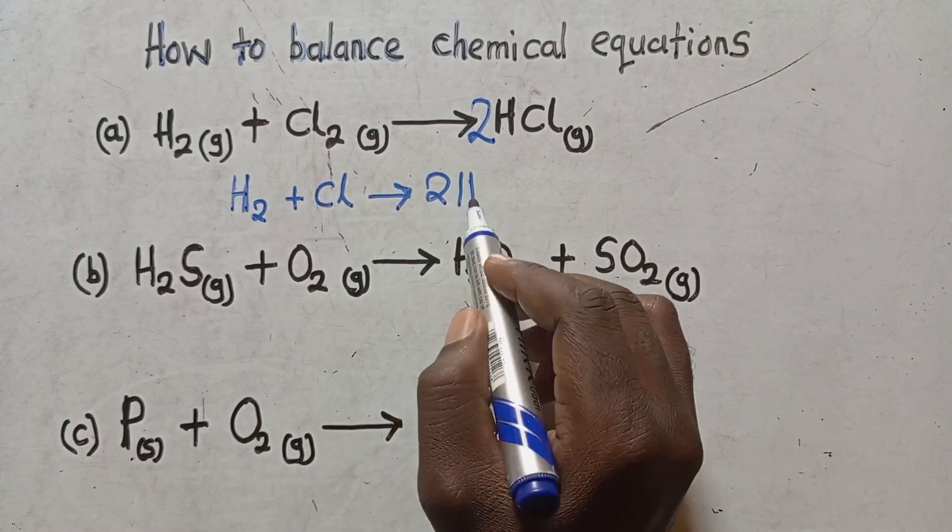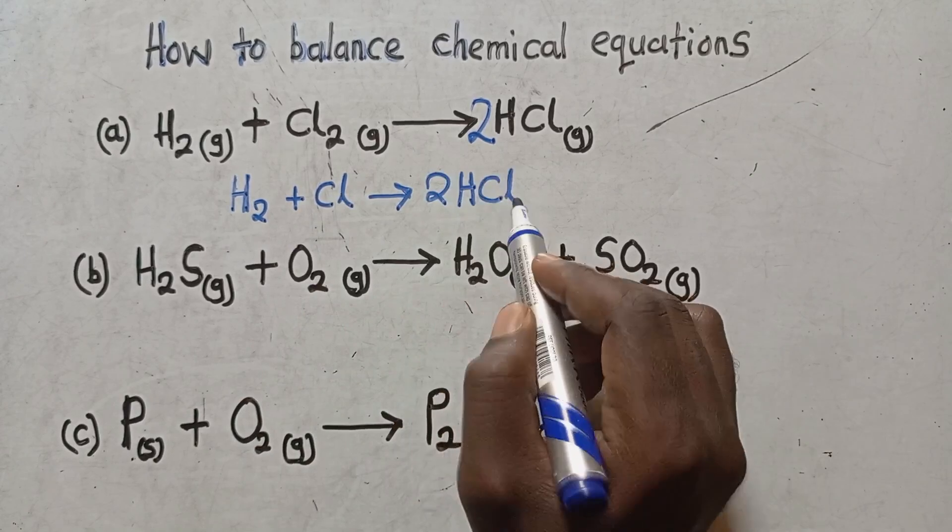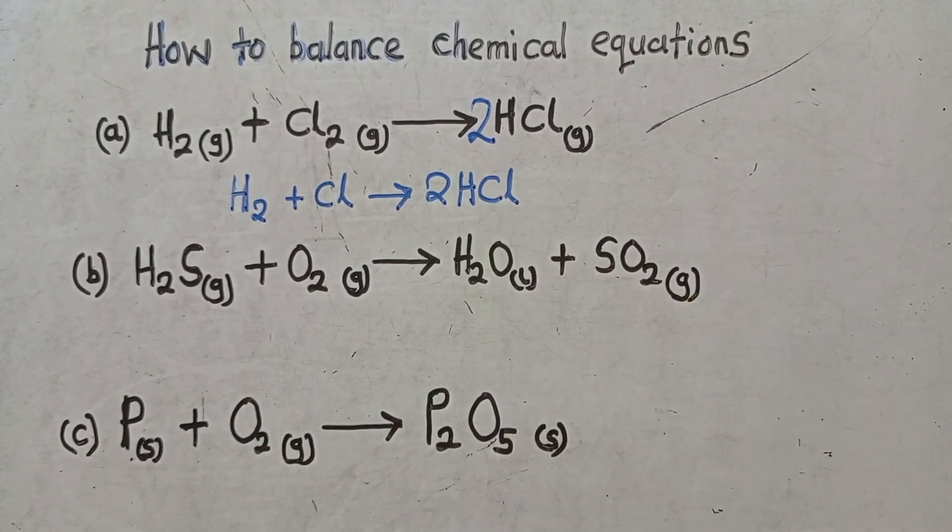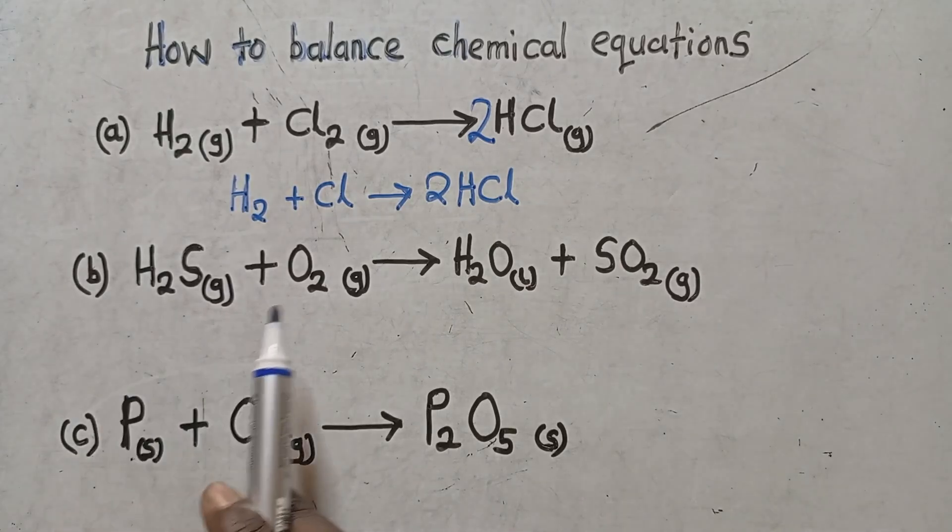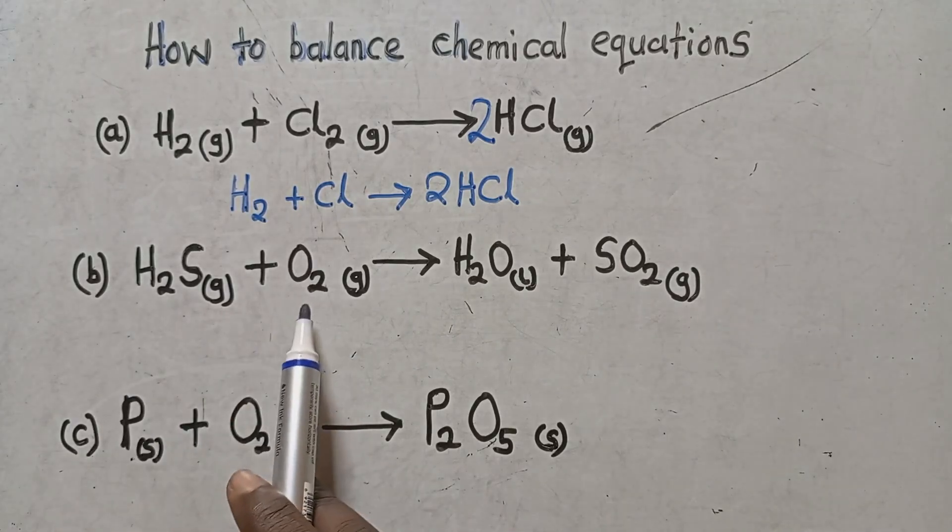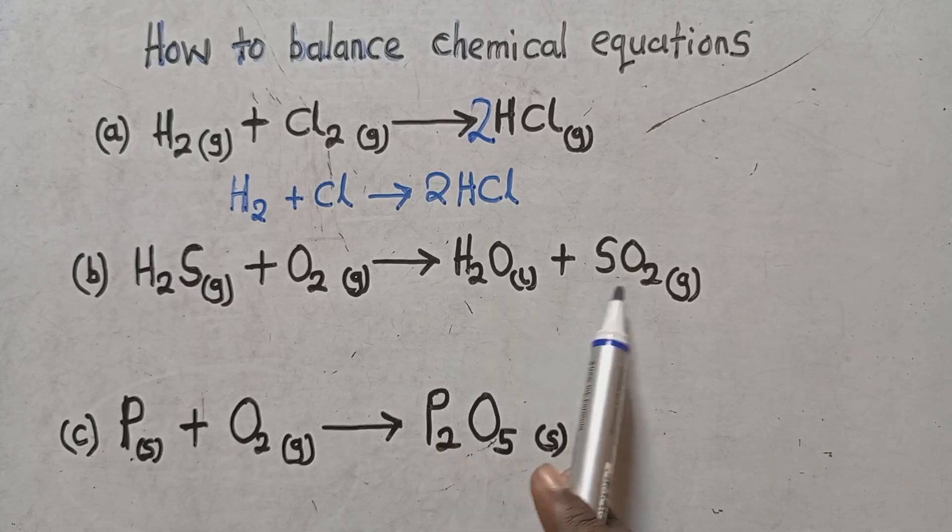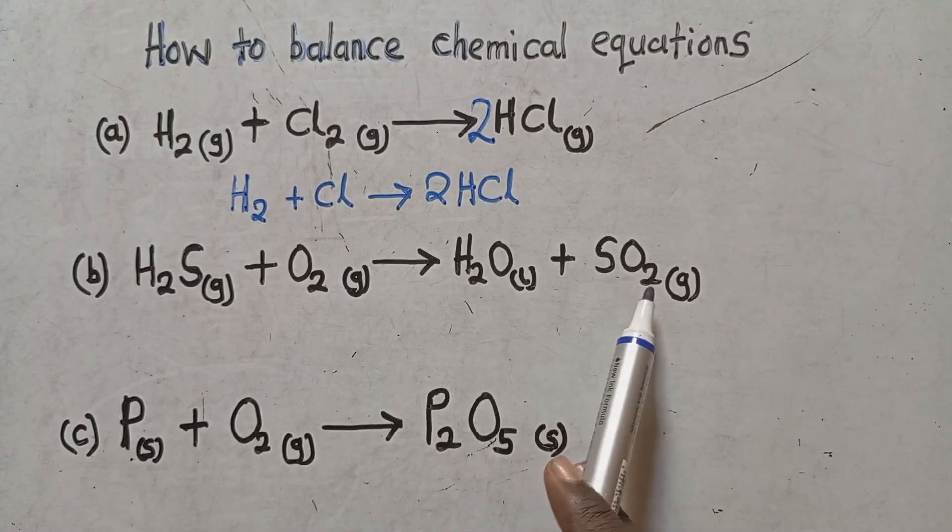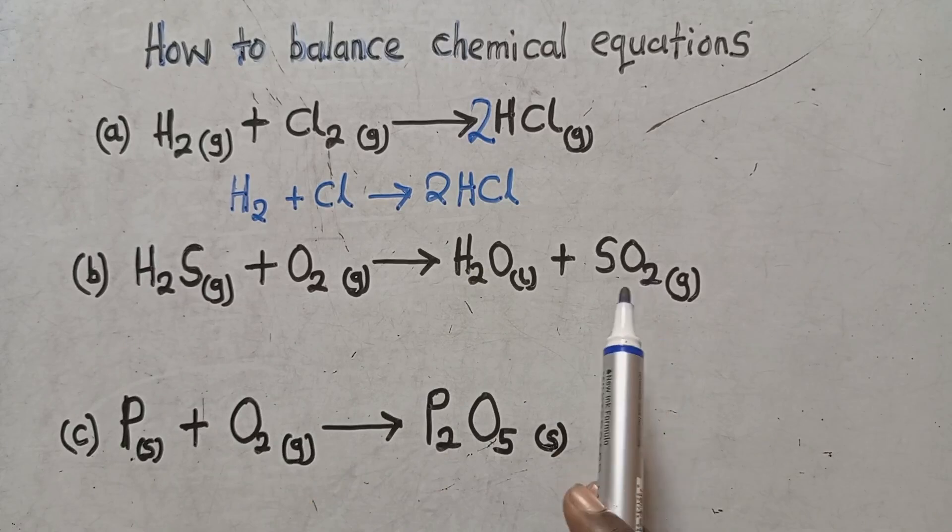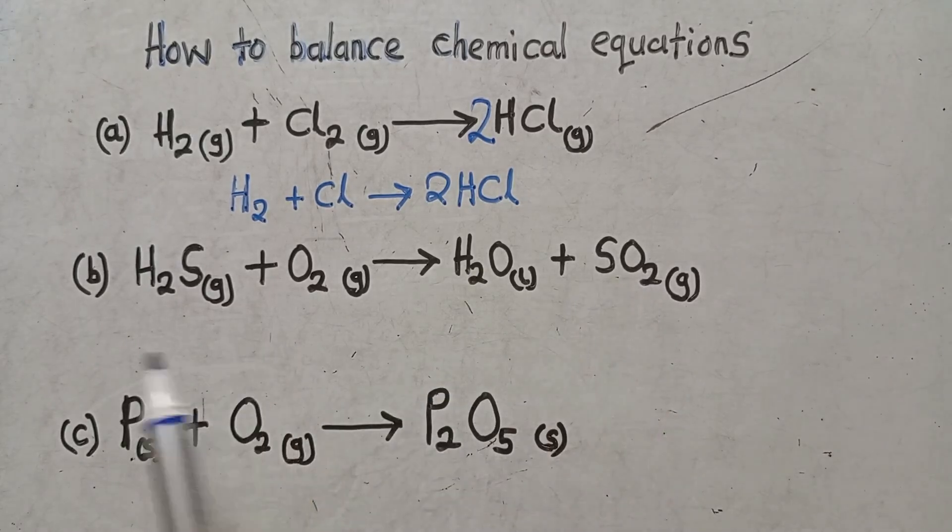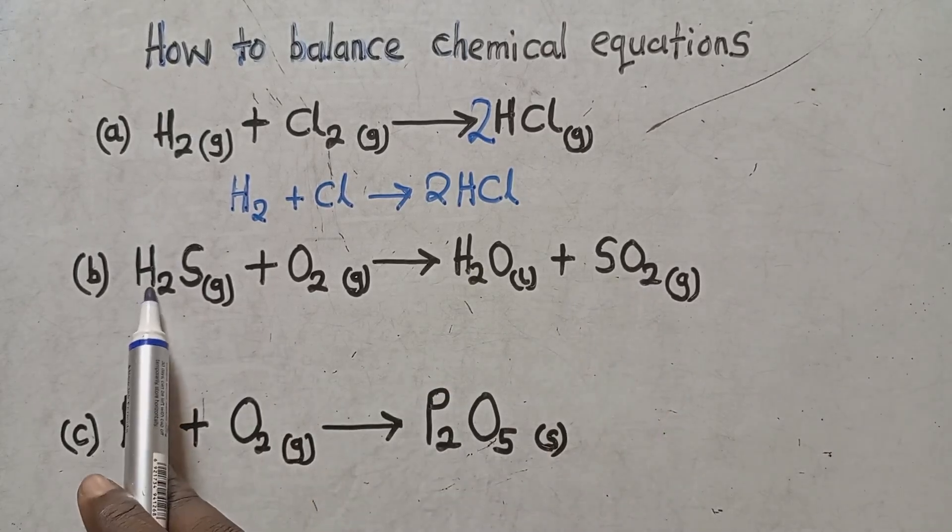So meaning the balanced equation is like this: H2 plus Cl giving us what? Two hydrogen chloride. So it means that I've balanced that equation. I move to the next one. I've got hydrogen sulfide plus oxygen to produce water plus sulfur dioxide.